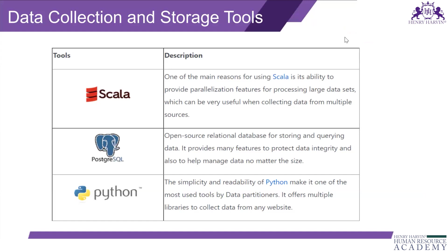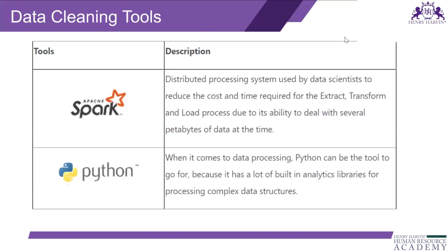PostgreSQL is an open-source relational database for storing and querying data. It includes many features to protect data integrity and help manage data no matter the size. Python's simplicity and readability make it one of the most used tools by data practitioners, offering multiple libraries to collect data from any websites. Spark is a distributed processing system used by data scientists to reduce the cost and time required for the extract, transform, and load process.